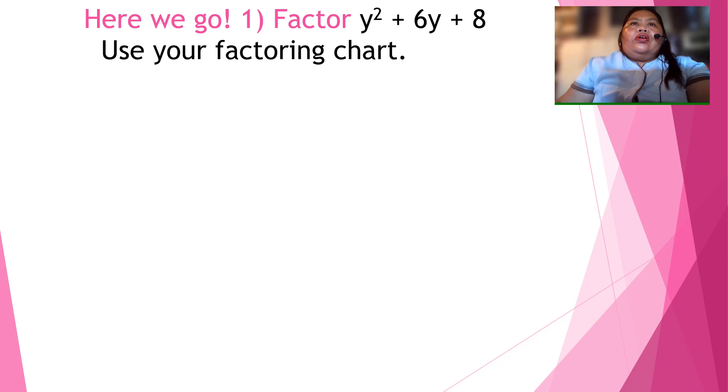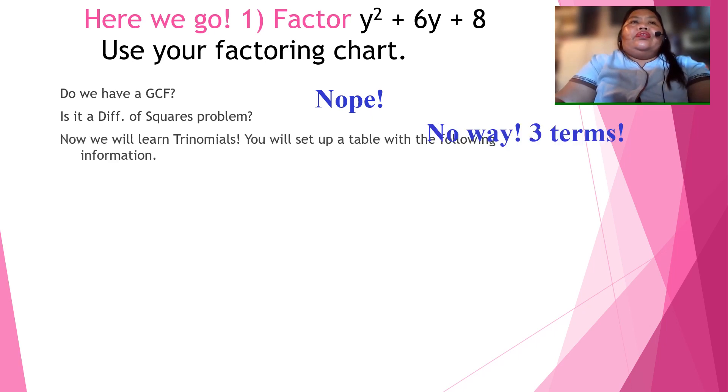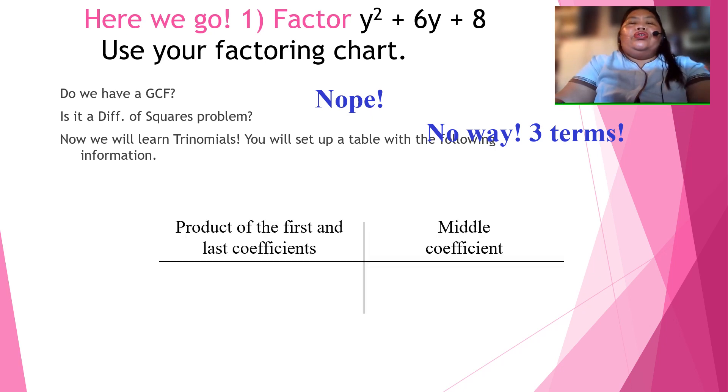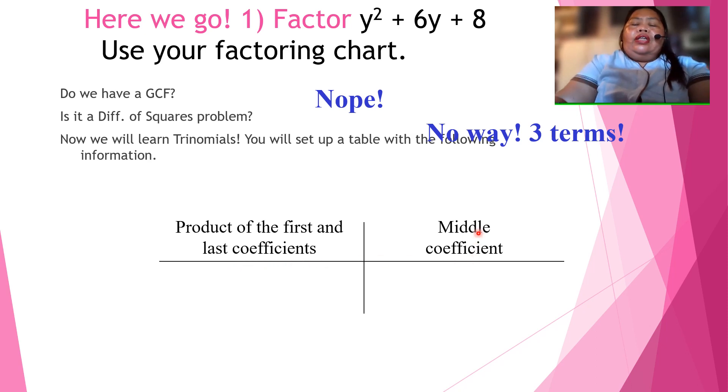Okay, so here we go. Factor y squared plus 6y plus 8. Using the factoring chart, do we have GCF? No. Is it difference of squares problem? No way. It's three terms. Now, we will learn trinomials and you will set up the table with the following information. So we have here the product of the first and the last coefficient and, of course, the middle term. Now, our goal is to find two factors in the first column that add up to the middle term in the second column, and we'll work it out in the next few slides.